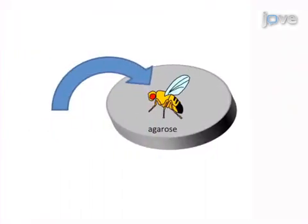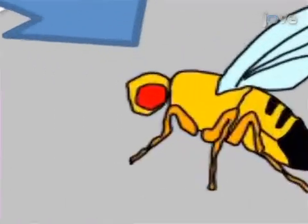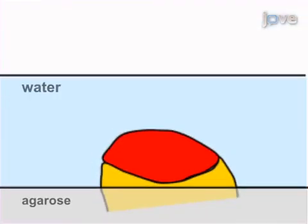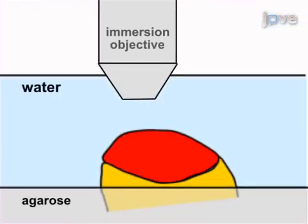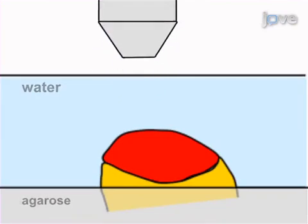As a second step, living flies are embedded into agarose, which maintains the fly immobile. Next, the retina of the immobilized living fly is imaged with a confocal microscope in order to view mosaic photoreceptor neurons.